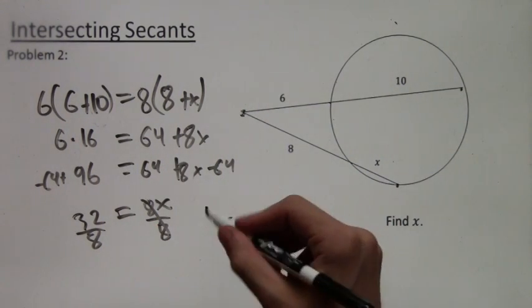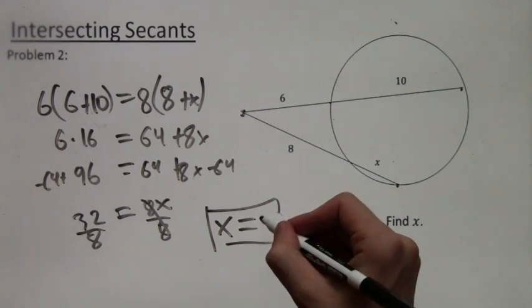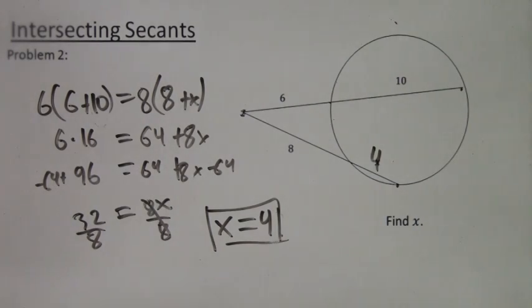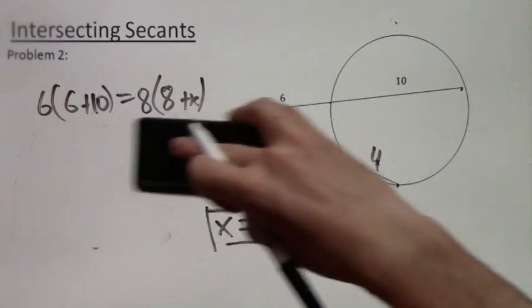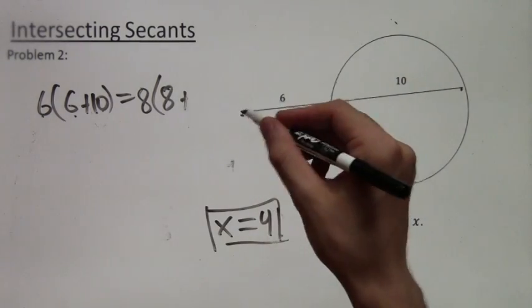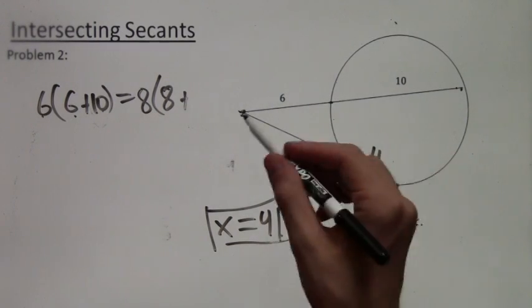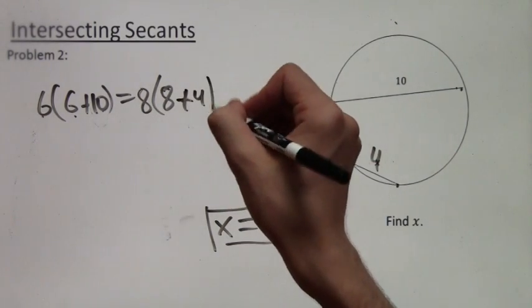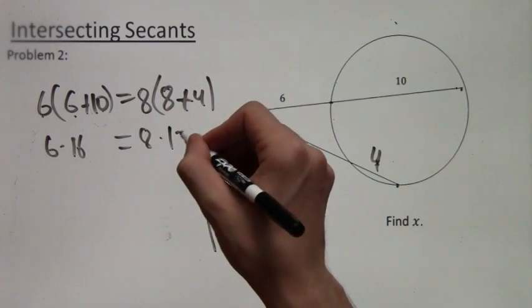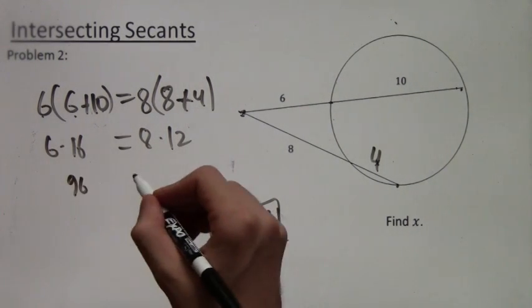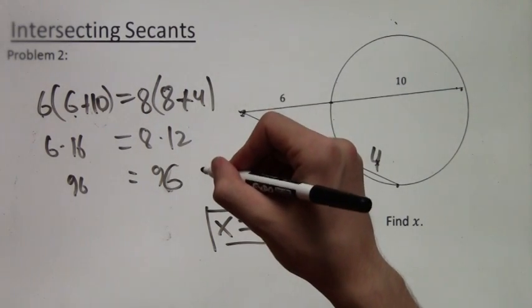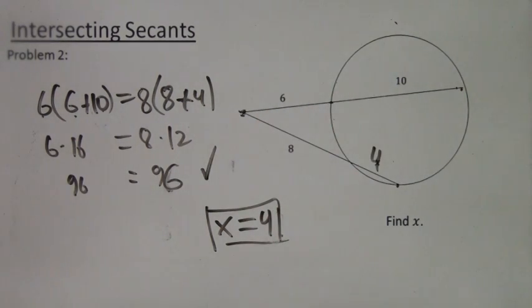So x is 4, and that is our answer. Now we're going to quickly check to make sure that x equals 4 really does work. We just have this original equation, 6 times 6 plus 10, 8 times, and we're hoping that x is 4, so 8 times 8 plus 4. And this simplifies to 6 times 16 equals 8 times 12. You could use a calculator or just calculate it on paper or in your head, but you'll get 96 equals 96, which is true. So x equals 4 is correct.